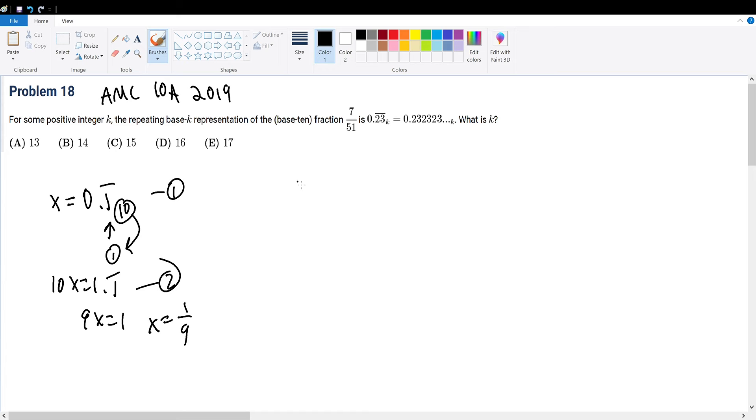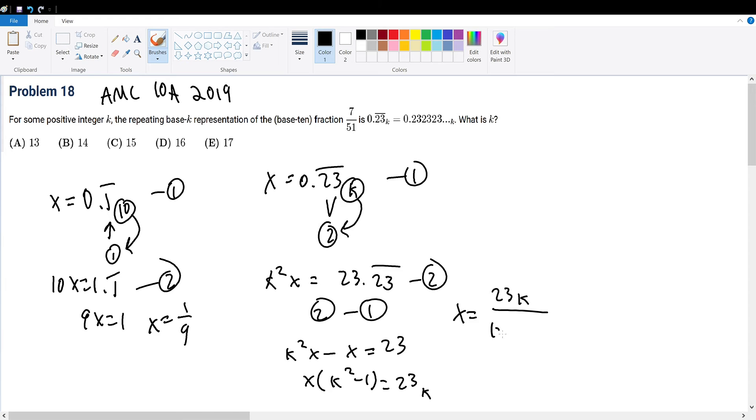But in this case, we're doing 0.23 repeating in base k. So likewise, we assign this to variable x. And depending on how many terms that's being repeated, in this case 2, we raise the base to that according number, which is k squared times x is equal to 23.23 repeating, call this equation 2, call this equation 1. Equation 2 minus equation 1 gets us k squared x minus x is the same thing as 23. And factoring x, k squared minus 1 is the same thing as 23. Hence, x will be the same thing as 23 base k over k squared minus 1.